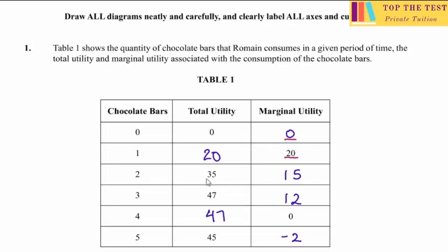When you move from 1 to 2 chocolate bars, they give us a total utility of 35. To find the marginal utility, we subtract 20 from 35 — that gives us 15.